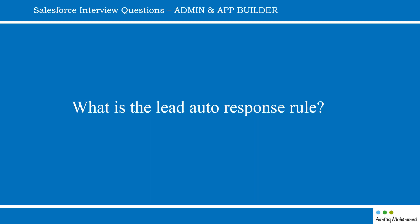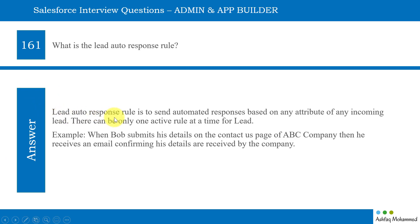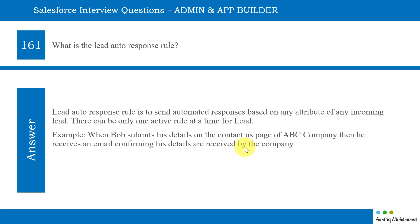What is the lead auto response rule? The lead auto response rule is used to send automated responses based on any attribute of an incoming lead. There can be only one active rule at a time for leads. For example, when Bob submits his details on the contact page of ABC company, he will receive an email confirming his details are received by the company. That's it for today.